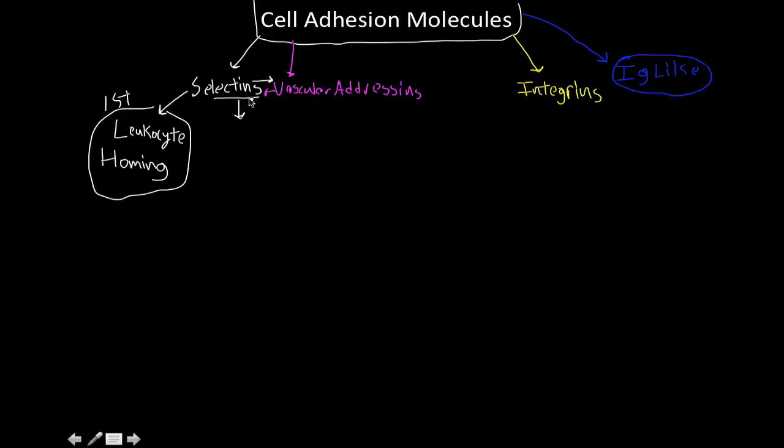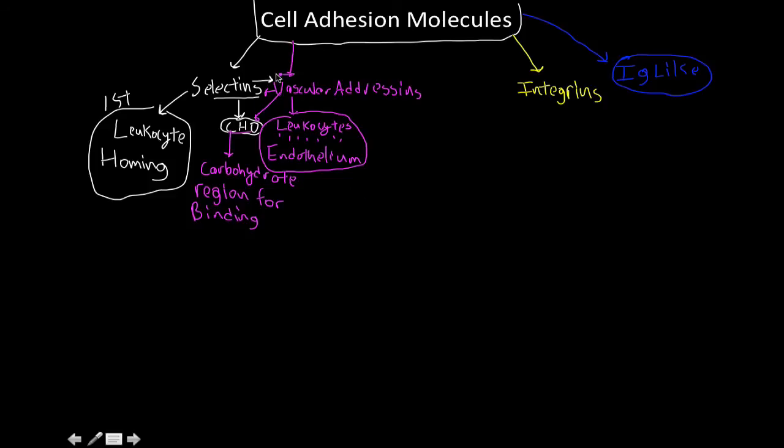So what part of the vascular addressins do the selectins bind to? Well, just like it says in the name, if it's a lectin, it's going to bind to the CHO. In this context, it means carbohydrate, not a formal or an aldehyde group. So the vascular addressins are really going to facilitate the interactions between the leukocyte and the endothelium. They're going to also bind to the selectins through the use of their carbohydrate domain. So this is the carbohydrate region for binding. It's getting kind of messy, so I hope you can still see that I'm talking about the vascular addressins here in magenta.